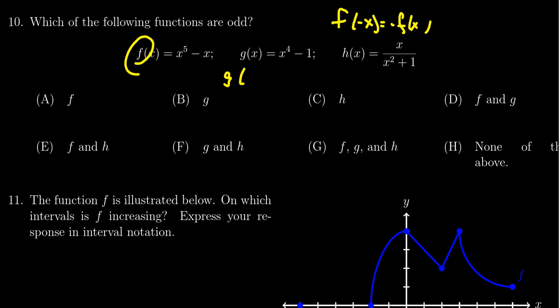To see it you do the same thing, you just look at g of negative x for which you replace all of the x's with a negative. Now even powers will absorb the negative sign, negative one squared is in fact positive one. So this becomes x to the fourth minus one which is the same thing as g of x and that's what characterizes even functions.